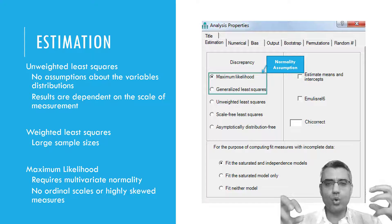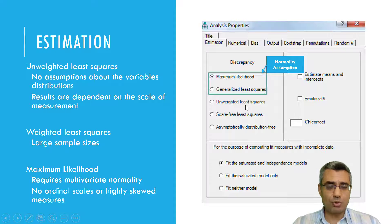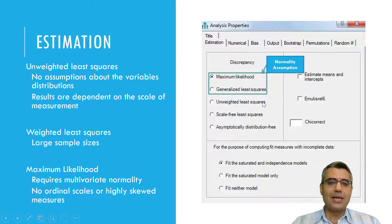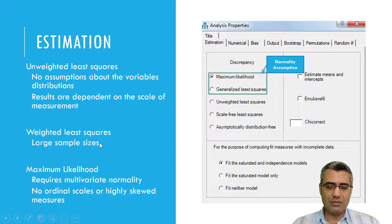However, with unweighted least squares, the results depend on the scale you use — for instance, measuring distance in meters versus inches gives different results, which we don't want. Weighted least squares doesn't have this scale-dependency issue, but it requires a very large sample size — in SEM, that means maybe ten thousand, fifteen thousand, or even fifty thousand cases, which is not easy in most studies.